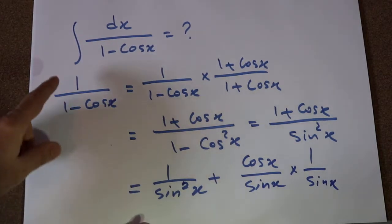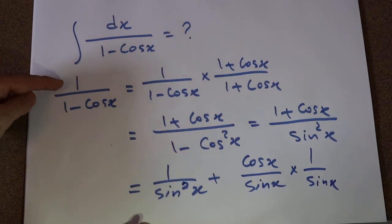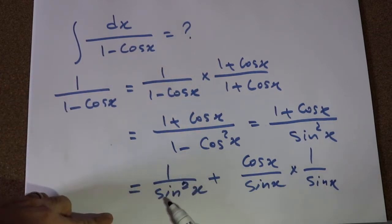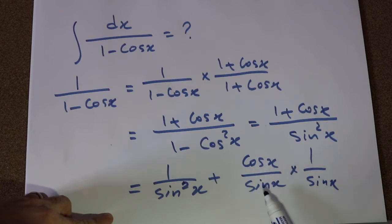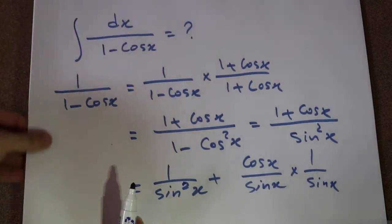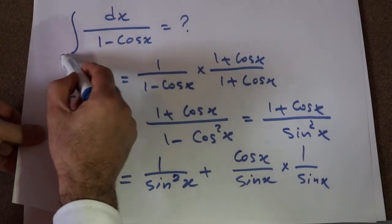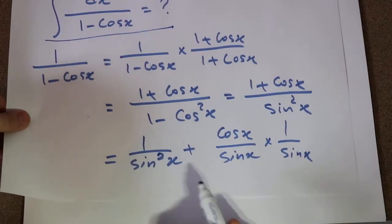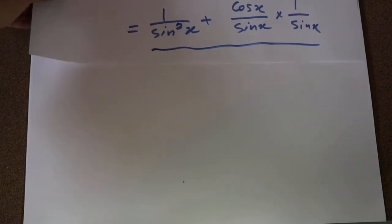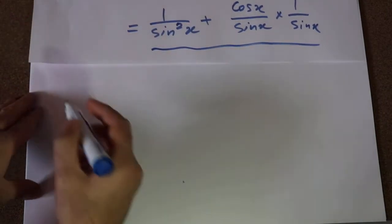Basically, all I did was rewrite 1 divided by 1 minus cosine x as 1 divided by sine squared x plus cosine x divided by sine x times 1 divided by sine x. So therefore, this integral will now be equal to the integral of this expression.